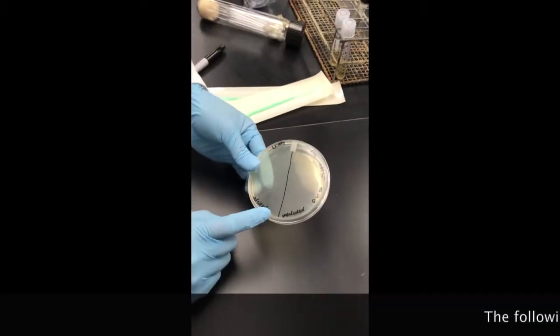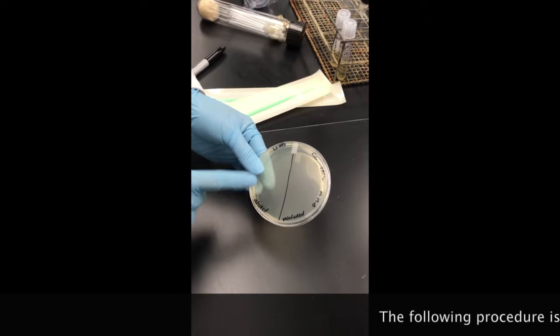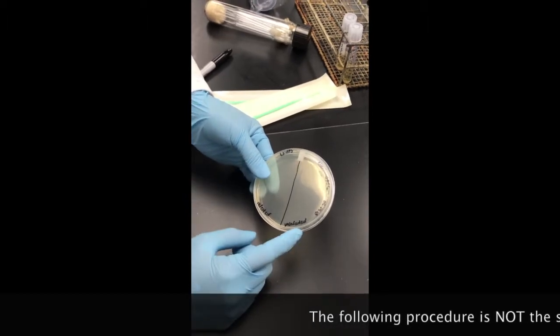So with your TSA plate, you're going to divide it in half, and you're going to label one side with infected and the other side with uninfected.